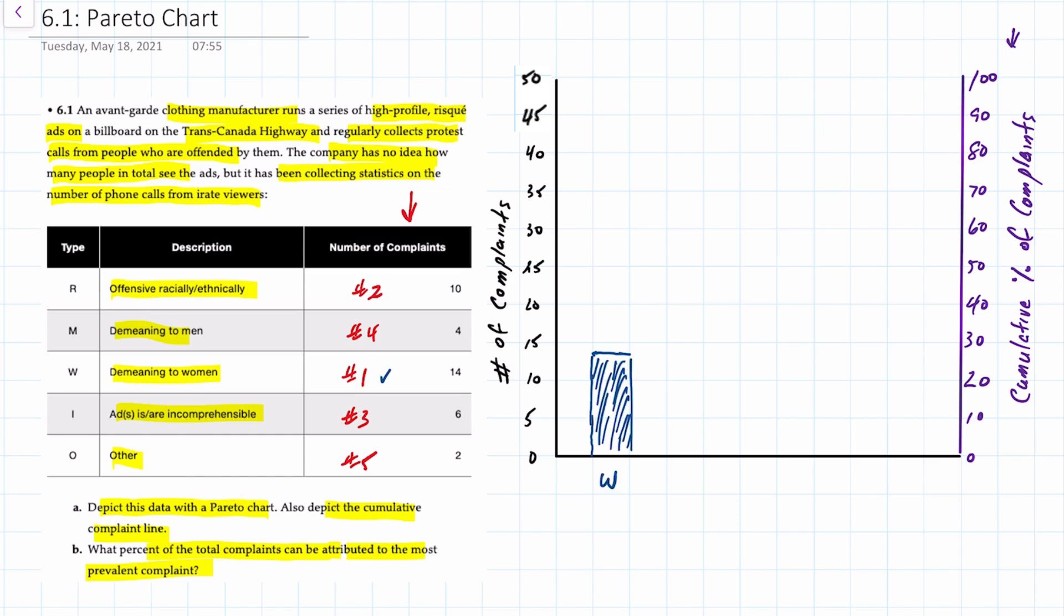The next one is offensive or R and there are a total of 10 complaints. 10 complaints would be something like that. The third ranked is incomprehensible with six complaints. So six complaints would be about here. That's I for incomprehensible.